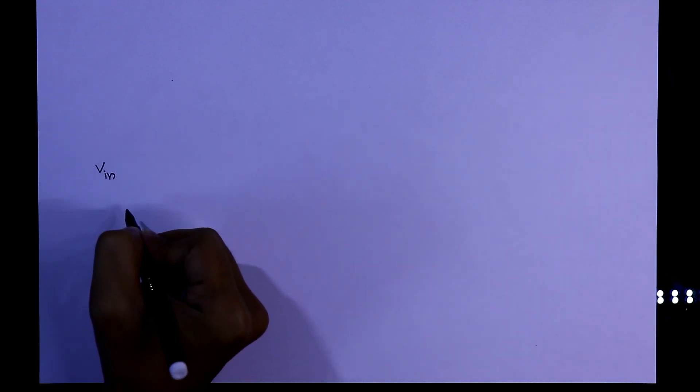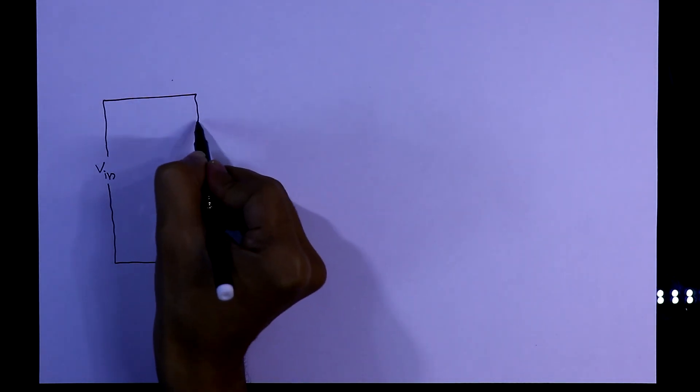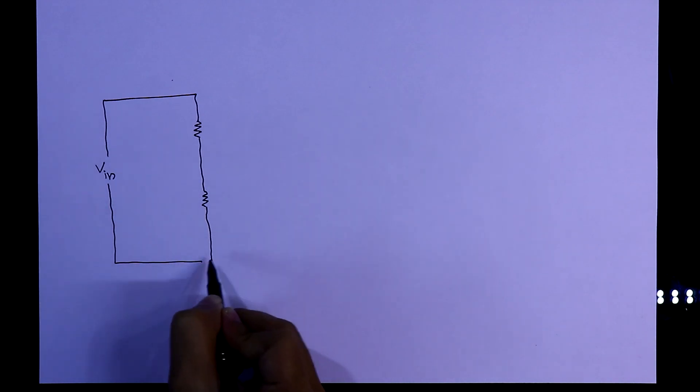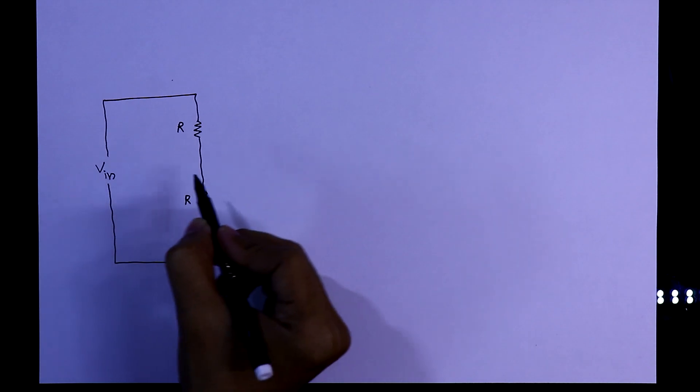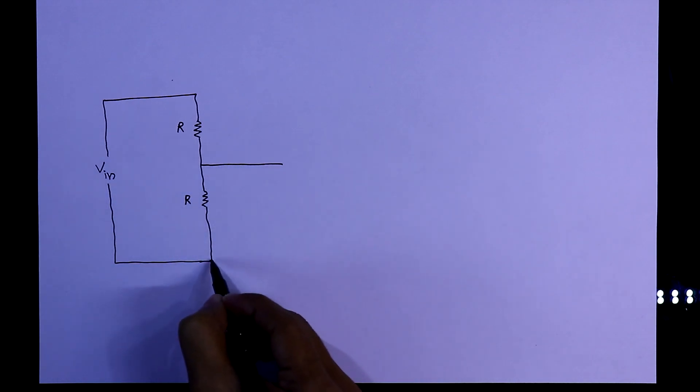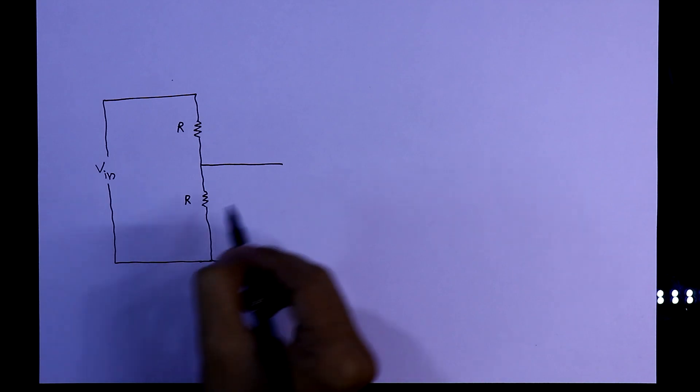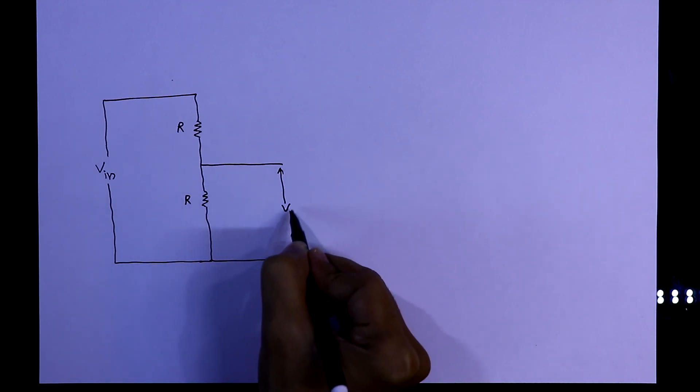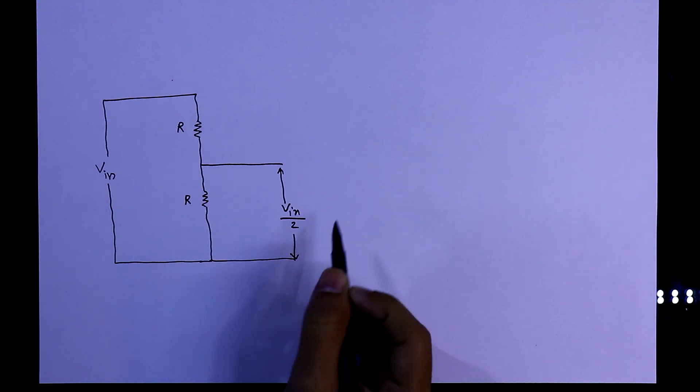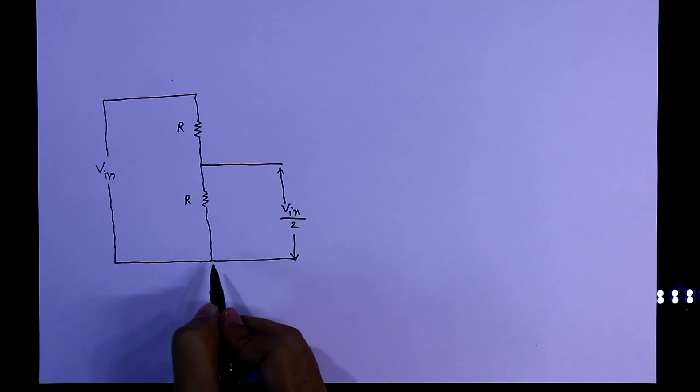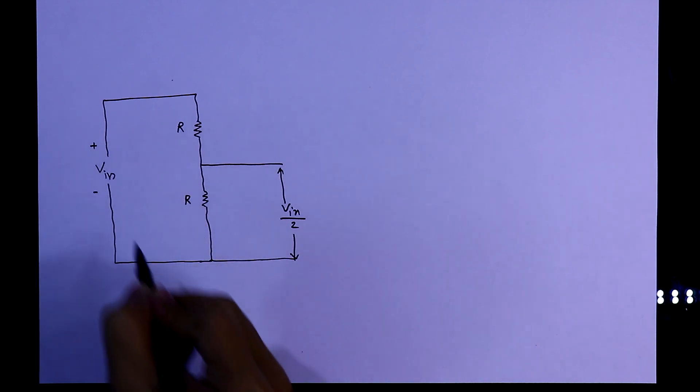In this video we will see resistor as a voltage divider. If we have a voltage and we connect this voltage with two resistors, if both the value is same then these two resistors are dividing this voltage by 2. That means in this point we will get Vin by 2 volt. We have to calculate the voltage from the ground side. It is negative and here it is positive.